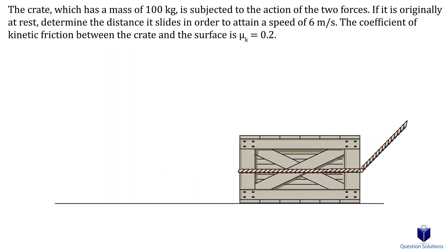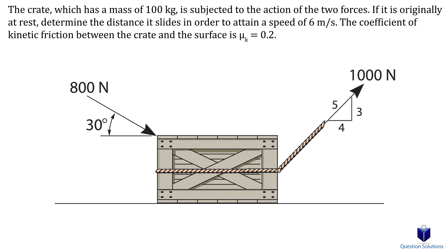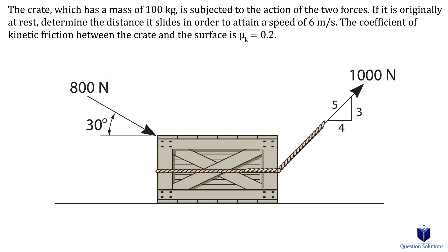When we do examples, this will make more sense. In this first question, we need to find the distance the crate slides in order to attain a speed of 6 meters per second. We're given the coefficient of kinetic friction, so we need to consider friction. Looking at the diagram, we have two forces — one pushes and one pulls — so both will do positive work, while the frictional force will do negative work.